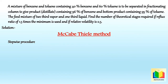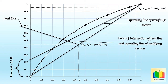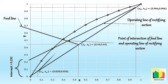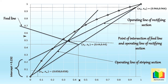The next step is to draw the operating line of the stripping section. From the graph we already have the intersection point between the feed line and the operating line of the rectifying section, so there is no need to separately find the slope and intercept of the stripping section operating line. We plot point (xw, xw) = (0.058, 0.058) on the diagonal, then draw the operating line of the stripping section from (xw, xw) passing through the intersection point of the feed line and rectifying section operating line. In this way we obtain the operating lines for both the rectifying section, stripping section, and the feed line.